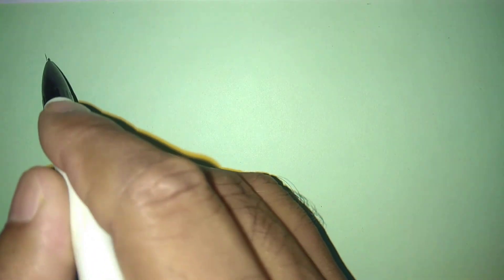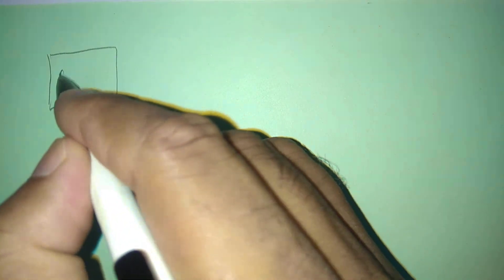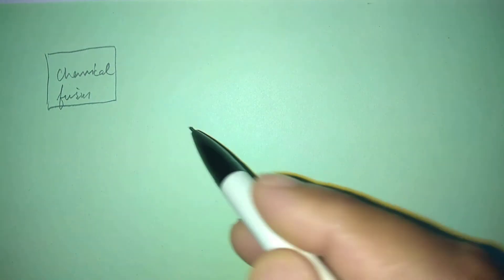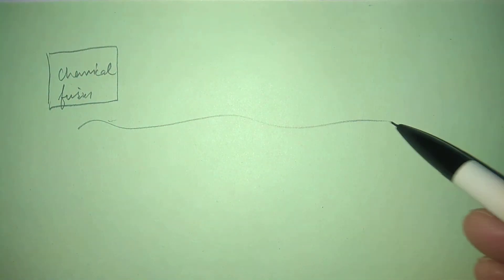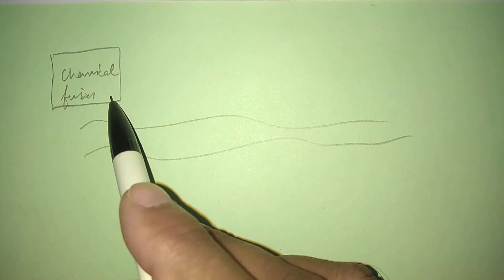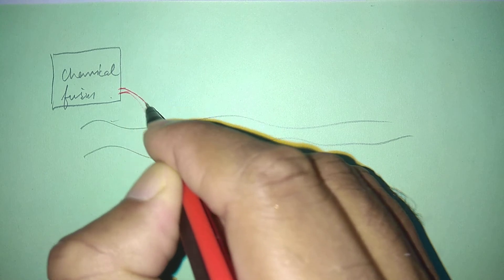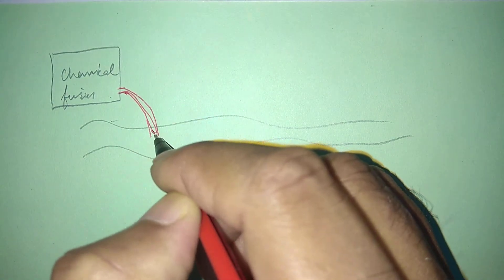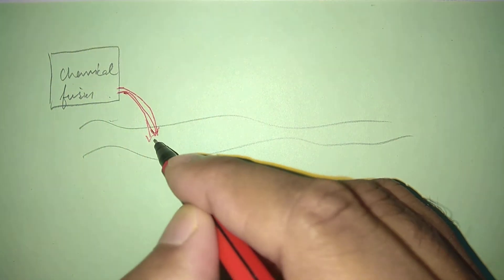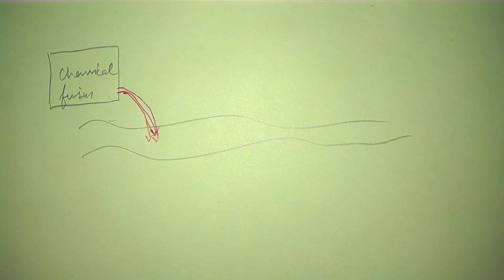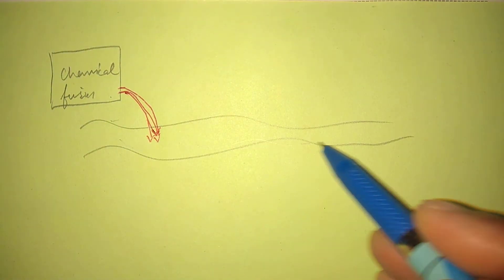Diagrammatically अगर हम इसको explain करने की कोशिश करें — suppose यह कोई chemical firm है, और पास में एक river जा रही है। इस chemical firm ने अपना production किया और production के बाद जो भी waste material था, वो waste material इन्होंने river में dump कर दिया।